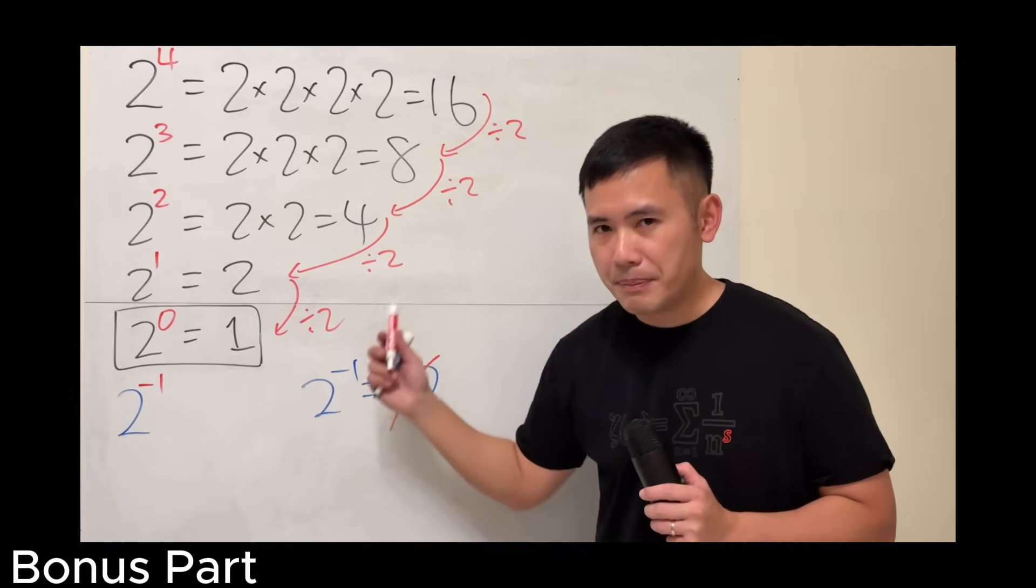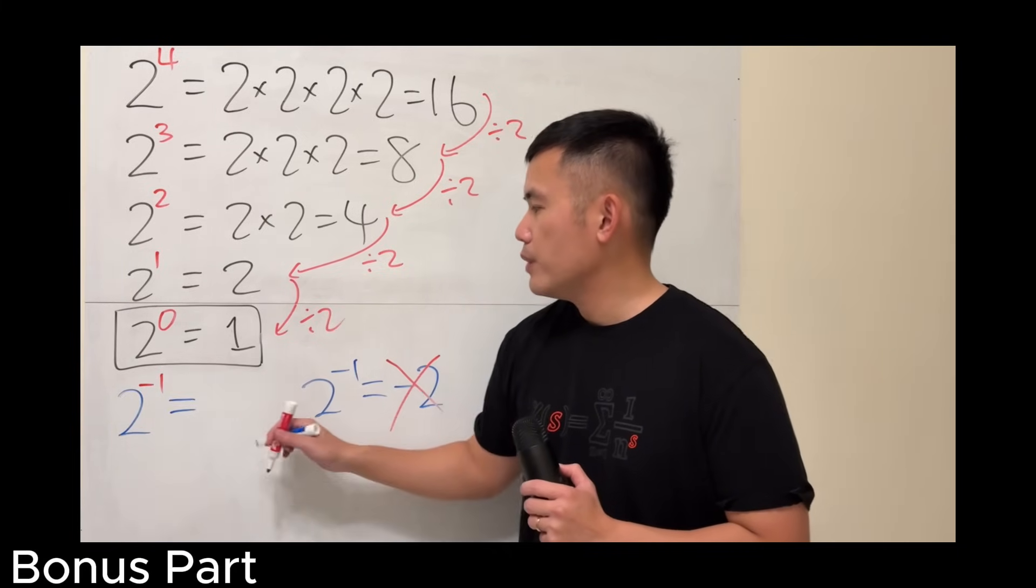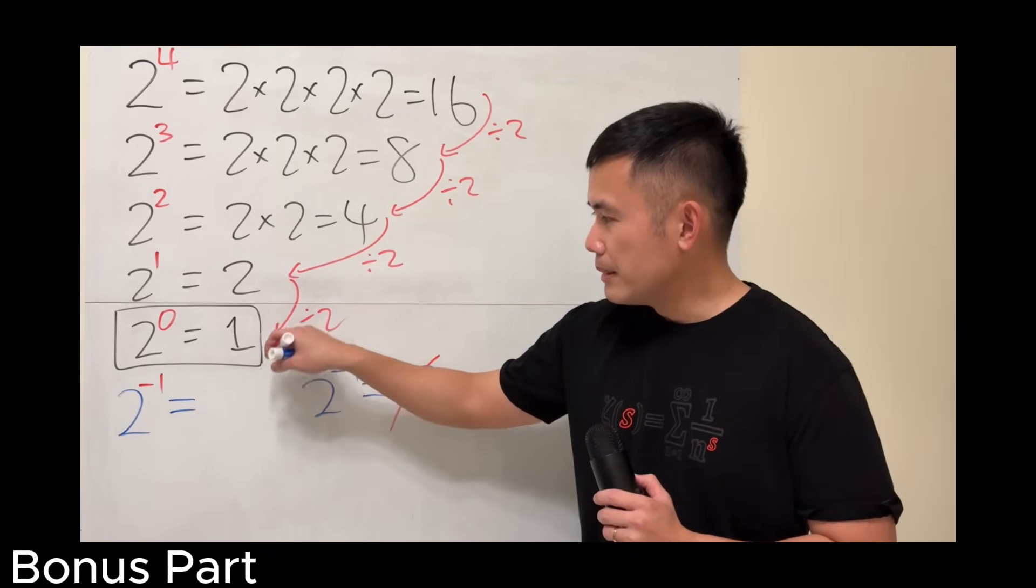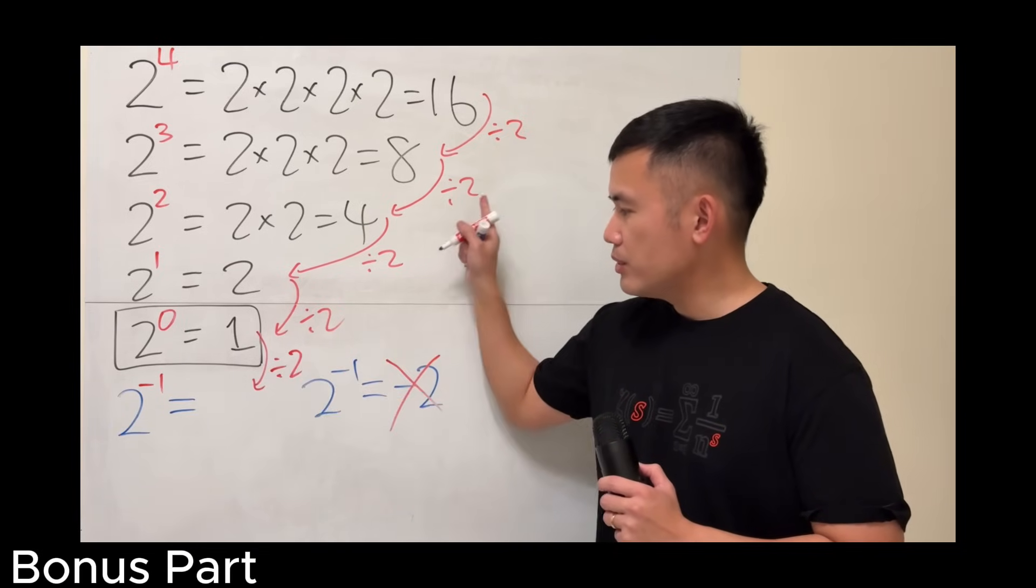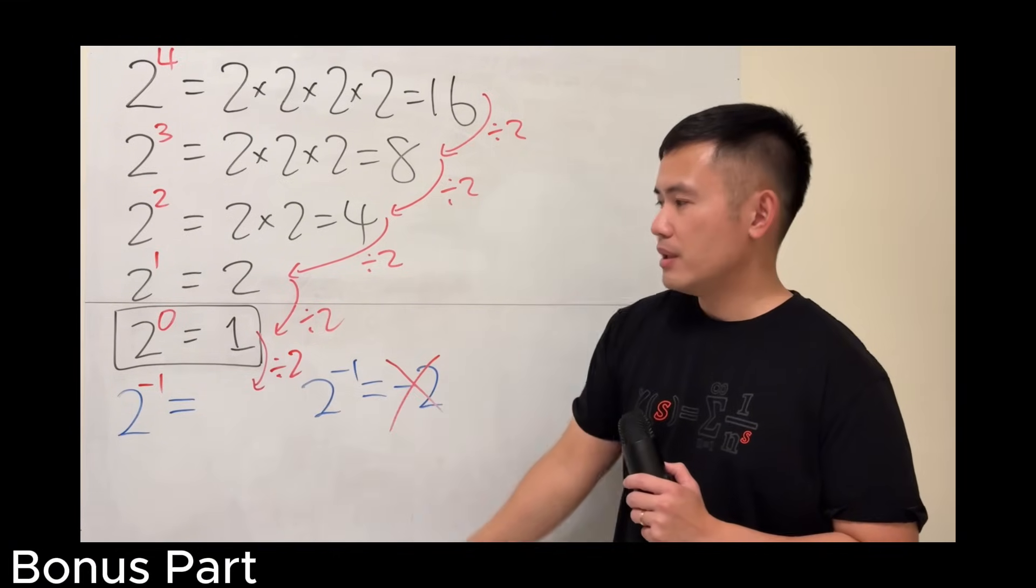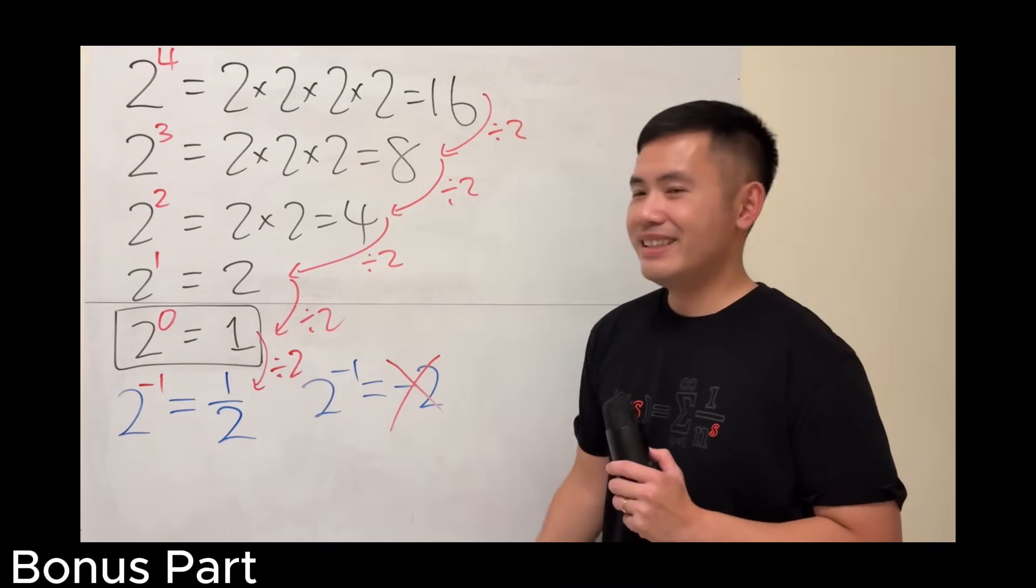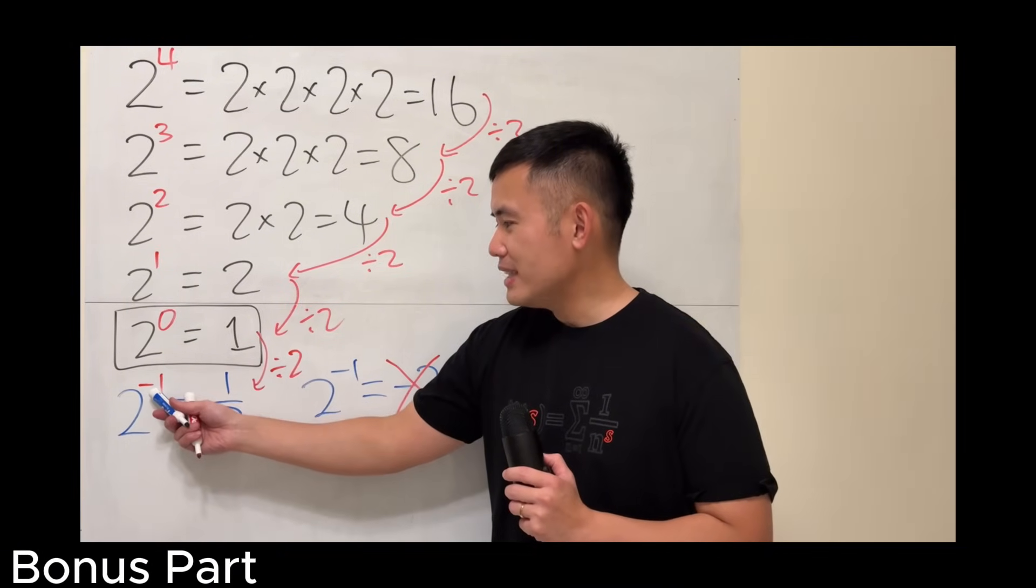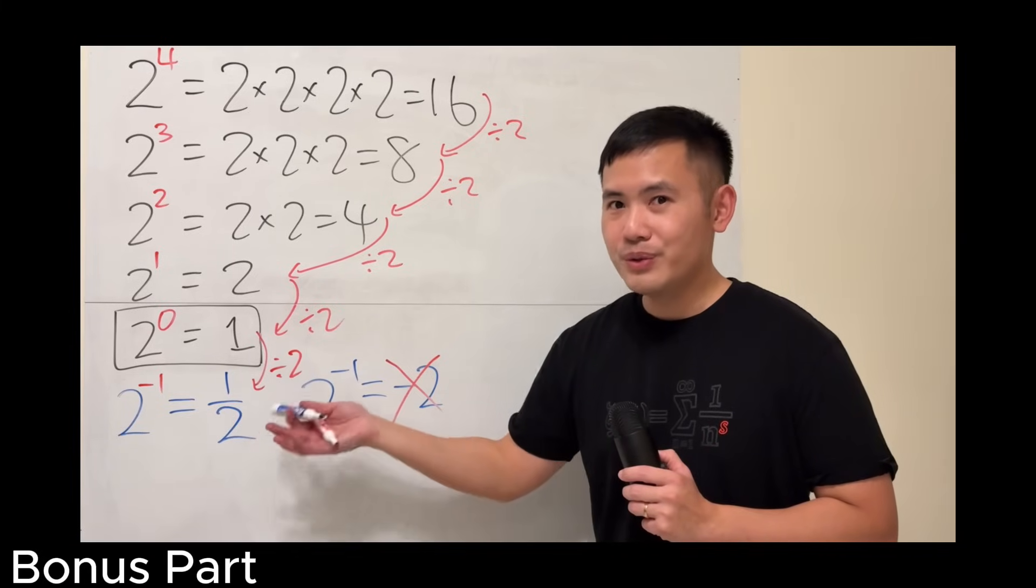Remember, we still have to follow the pattern. So, to figure out 2 to the negative 1, we'll take the 1, this number here, the previous number, and then divided by 2. It's been always divided by 2. 1 divided by 2, we get 1 half. So, in fact, when we have the negative 1 exponent, 2 to the negative 1, we actually get 1 over 2. We get a fraction.